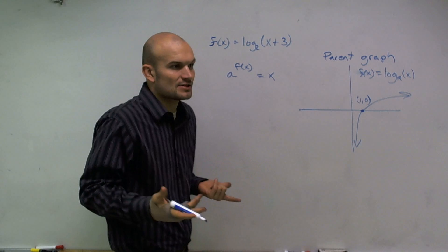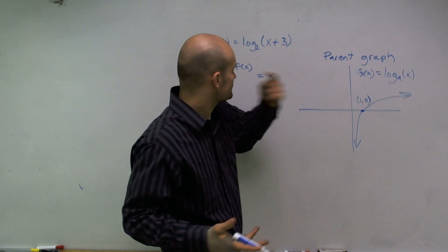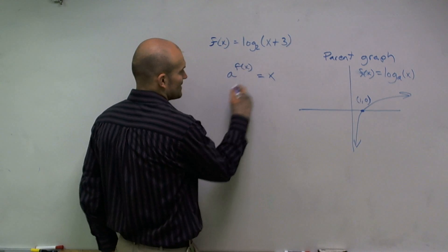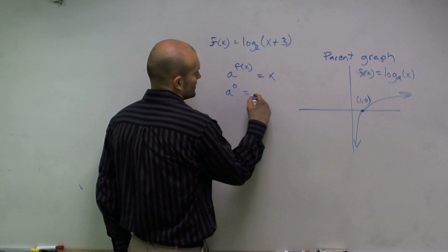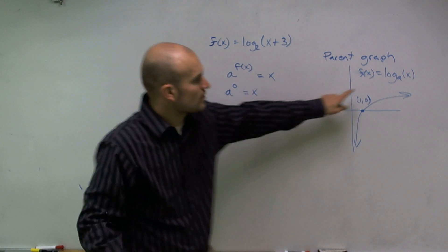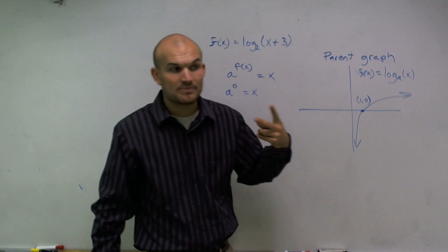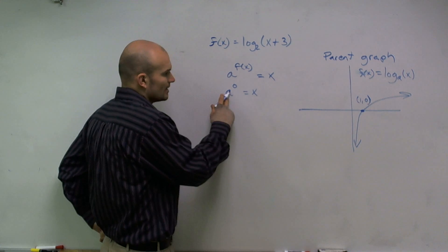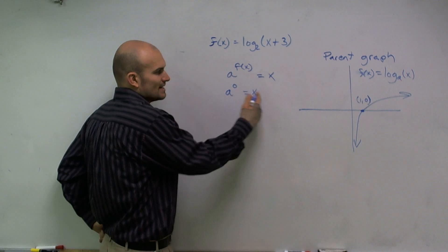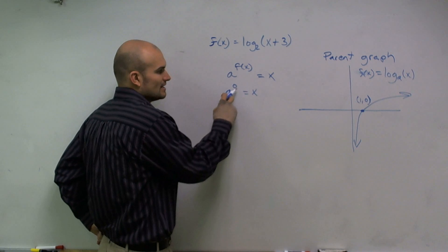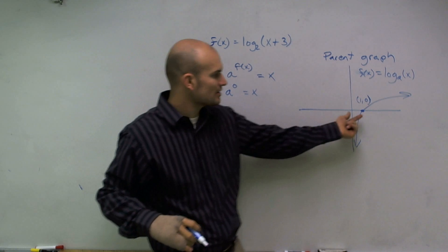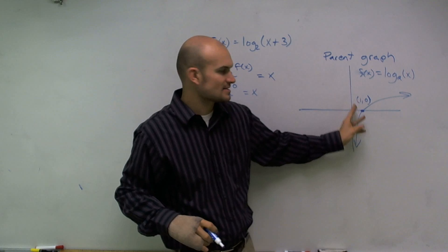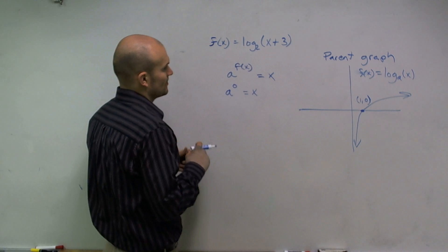Remember, what is an x-intercept? An x-intercept is when y equals 0. So if f of x equals 0, then a to the 0 equals x. It doesn't matter what the base is — a could be 5, a could be 10, a could be e, a could be anything. You cannot raise a number to 0 and not get 1. So any number raised to 0 is always going to give 1, and that's why the parent graph crosses at (1, 0).